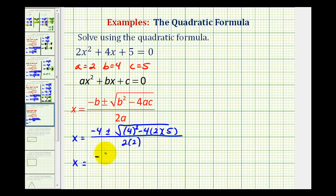So we'll have negative 4 plus or minus the square root of 4² is 16, and we'll have minus 4 times 2 is 8, times 5 is 40, so minus 40. Denominator is 4.